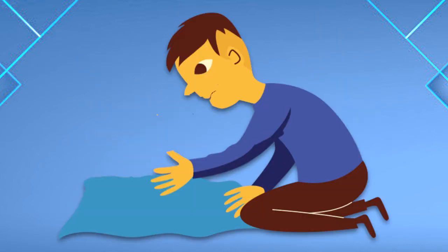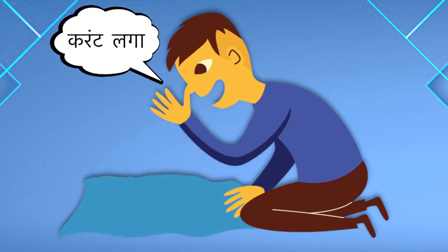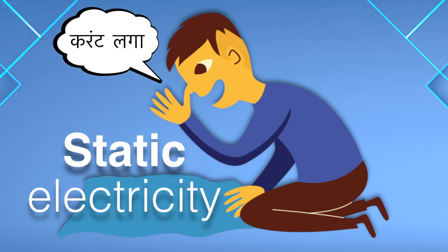Kai baar hum garam kapde haat lagate hai aur ek jhatka aata hai. We instantly say current laga. This current is static electricity.